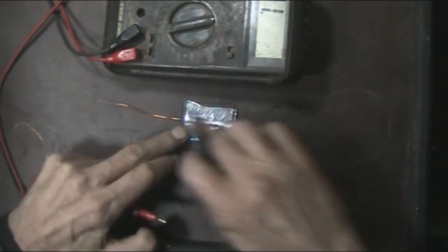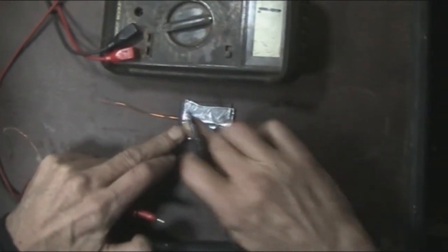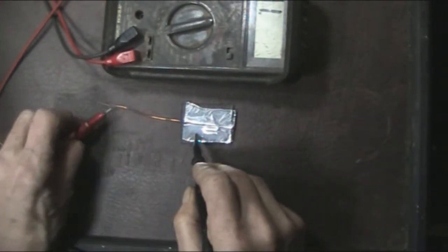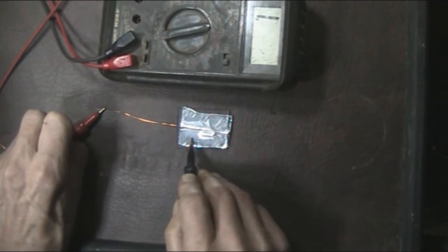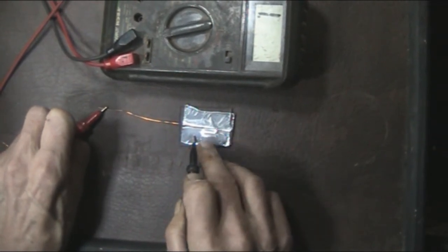Now I don't know if it will make a better contact if I rub it down a bit more, and it doesn't. So there's no actual continuity between the foil and the wire.